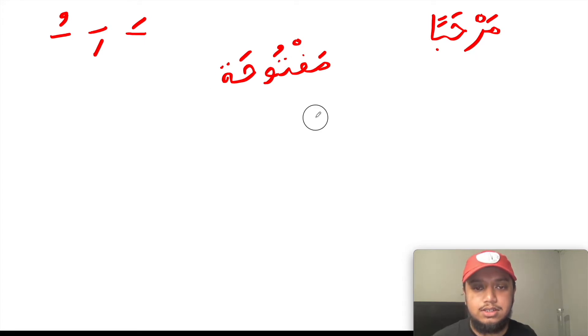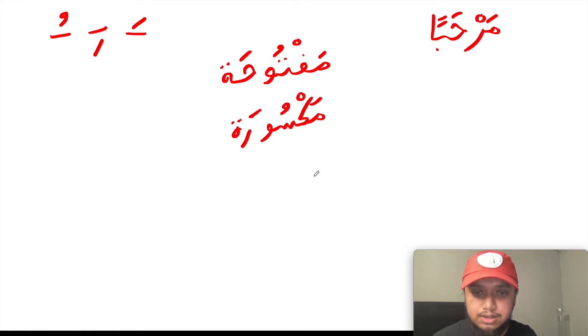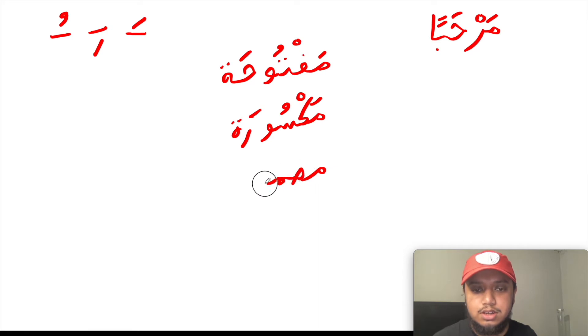A letter that has a kasra on it is known as maksura, and a letter that has a dhamma on it is known as madmuma.